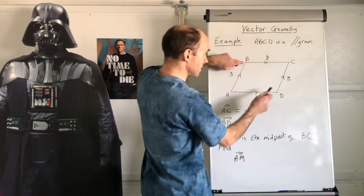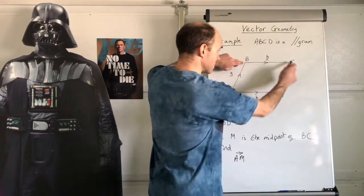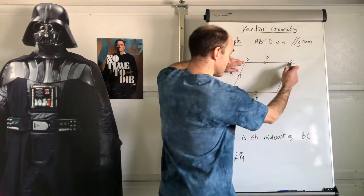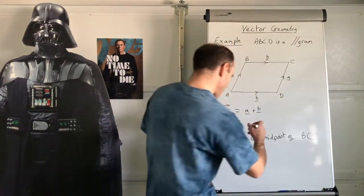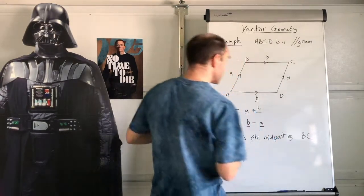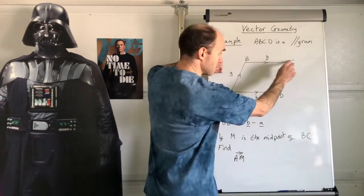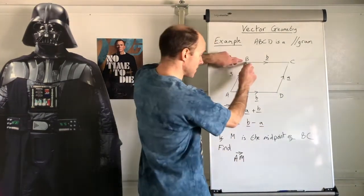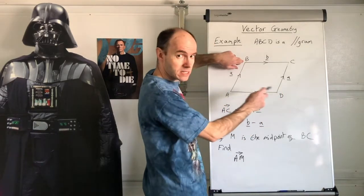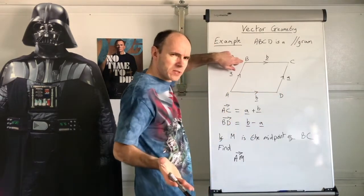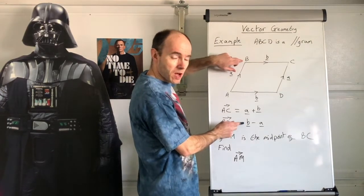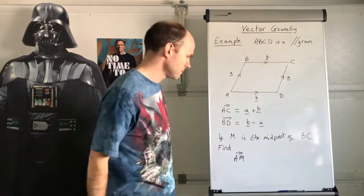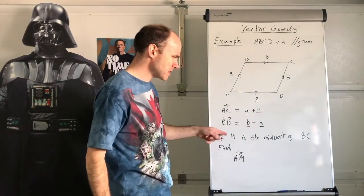B to D: you can go this then this, or this then this. I'll go B to A then A to D, giving negative a plus b. But what looks neat as an answer — negative a plus b, or b minus a? From algebra, it's always best to write b minus a — fewer symbols.